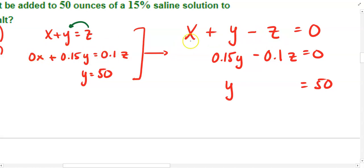In the second equation, same sort of thing happened. The 0x, in this case, did cancel or disappear, so I left it off. But I have 0.15y minus 0.1z equals 0. And then lastly, y is equal to 50. I left a little bit of space here to keep myself better organized.